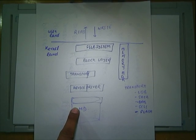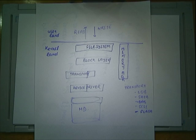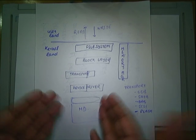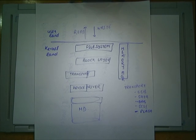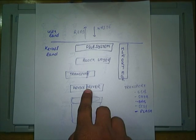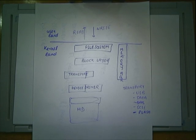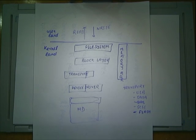The device driver understands the lower layer — whether it is a USB device or a SATA device. For a SATA device, the device driver takes the data buffer and translates the request into a SATA request that the underlying hard disk understands. The hard disk only understands SATA read and write requests; it knows nothing about the filesystem or the editor you used.